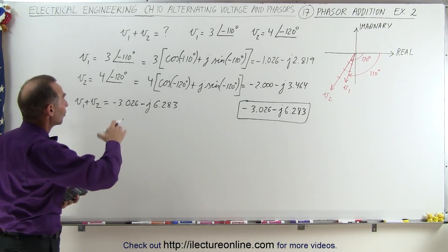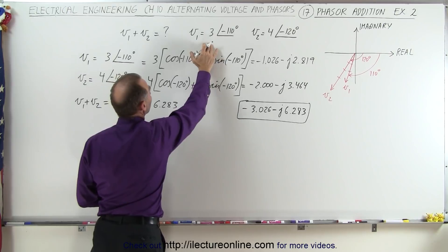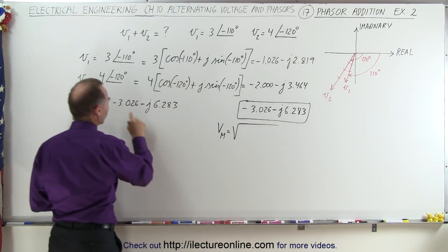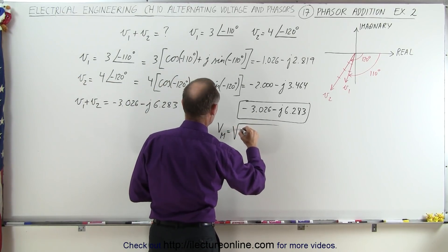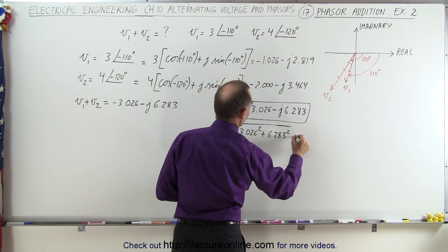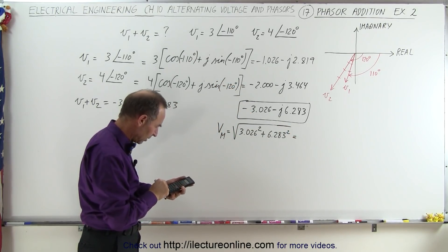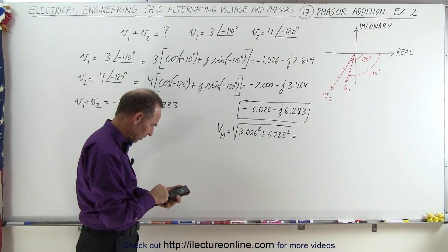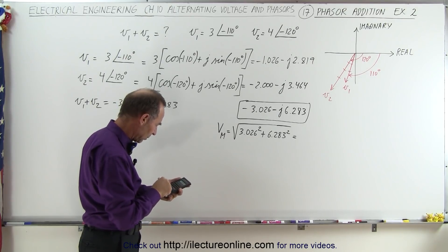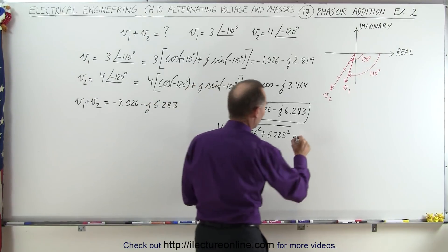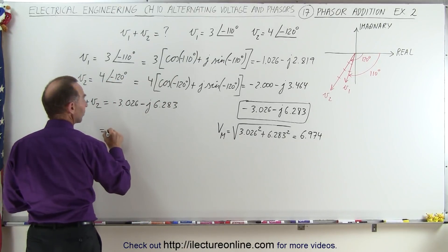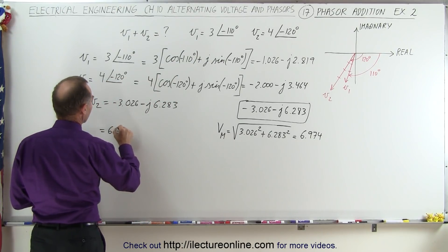So now we're ready to return that back to the regular format, where we have the magnitude and the phase angle. So for the magnitude, Vmax, that is equal to the square root of the sum of the squares of the components, we don't care if they're negative, that would be 3.026 squared, plus 6.283 squared, plus 3.026 squared equals, take the square root, and it gets 6.974 as the magnitude. So that means that this is equal to magnitude of 6.974.